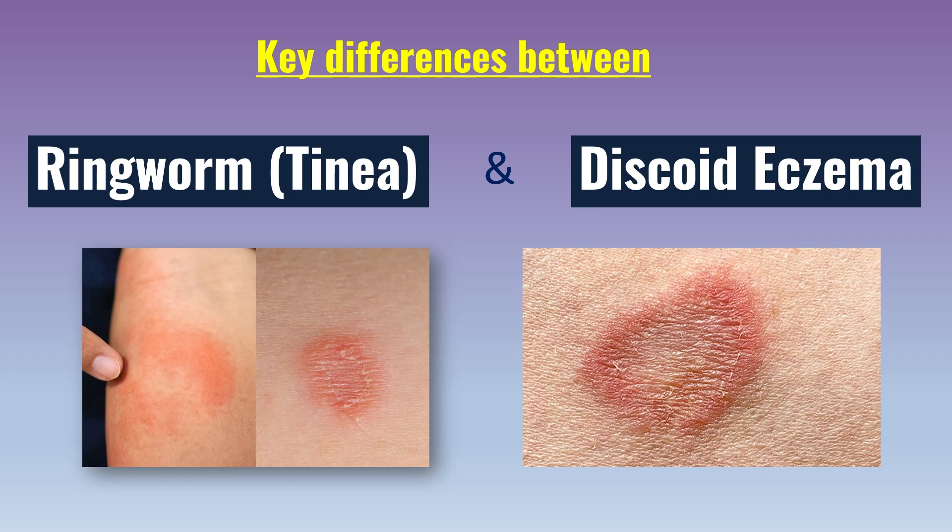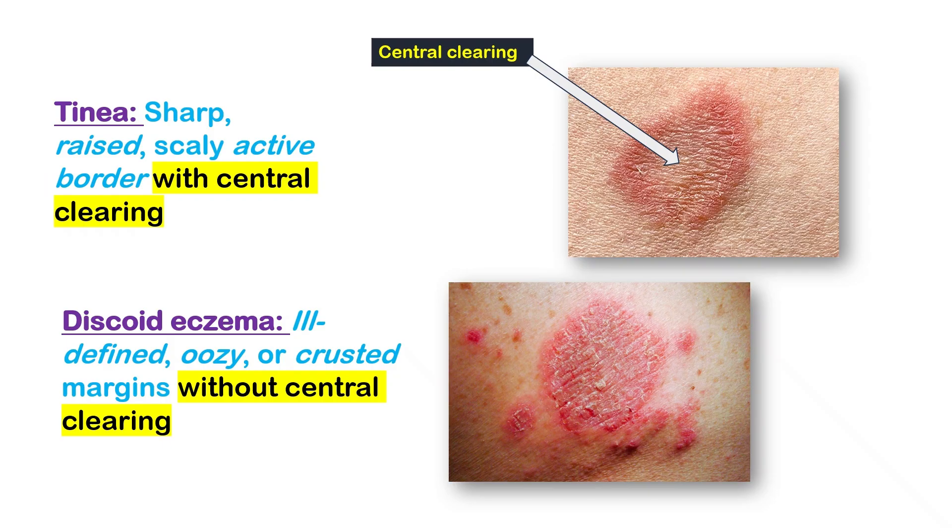Welcome. In this video, we'll learn how to clinically differentiate between ringworm, also known as tinea, and discoid eczema. Both can look similar — red, circular, itchy — but there are key differences every clinician should know.